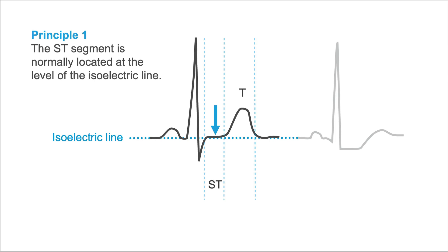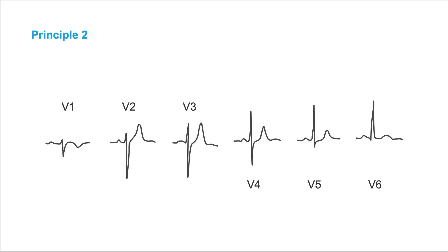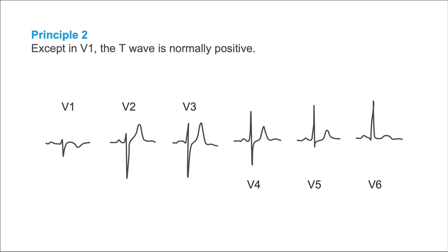So the ST-segment should be right at that same level. If it's lower than that, as in this example, then that's called ST-depression. Principle number two says that except in V1, the T-wave is normally positive. Here you see an example of a negative T-wave, and in all other examples the T-waves are positive. When the T-wave is negative, that's called T-wave negativity or T-wave inversion.